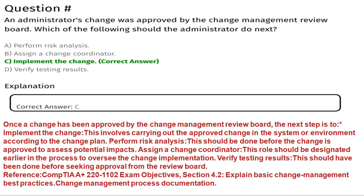Question number one: an administrator's change was approved by the change management review board. Which of the following should the administrator do next? Option A: perform risk analysis. Option B: assign a change coordinator. Option C: implement the change. Option D: verify testing results.